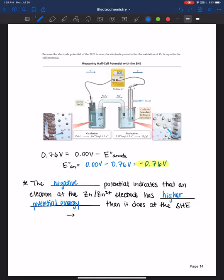It has higher potential energy than it does at the standard hydrogen electrode. The electrons want to travel from higher potential energy to lower potential energy, and that is for a spontaneous process. This process is definitely spontaneous if it's following that sort of trend.